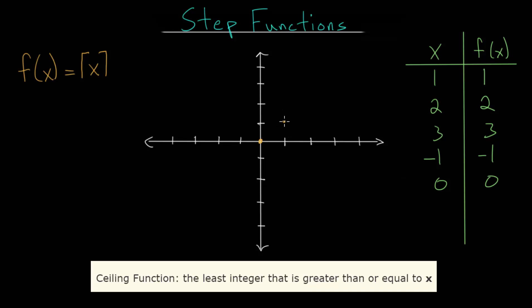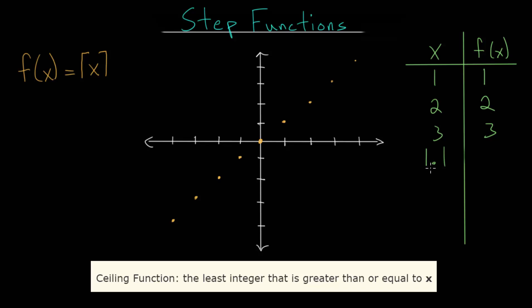In fact, for any integer we plug in we just get back that integer as our Y value. We can start graphing those points: the origin, then one-one, two-two, three-three, four-four, and so on. For integer values the function is not too exciting — it almost looks linear. But when you start to get to fractional amounts it becomes more interesting. For example, plugging in 1.1, the Y value is the least integer that is greater than or equal to 1.1, and there are infinitely many such integers — two, three, four, five, and so on.